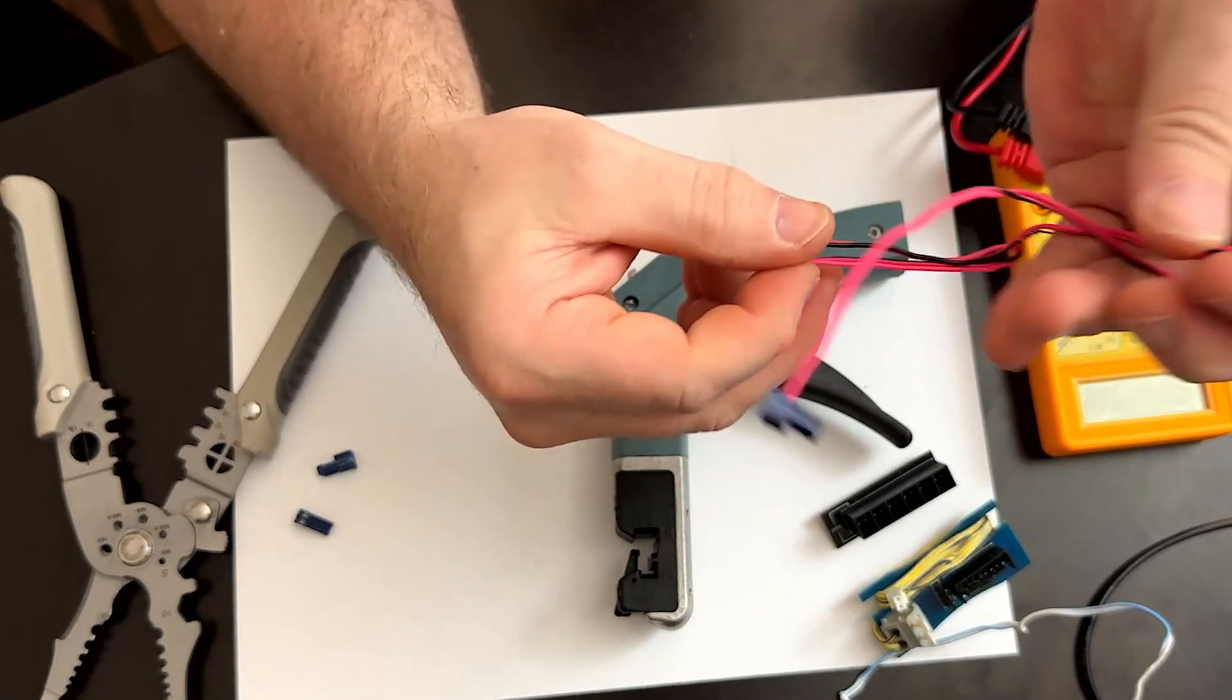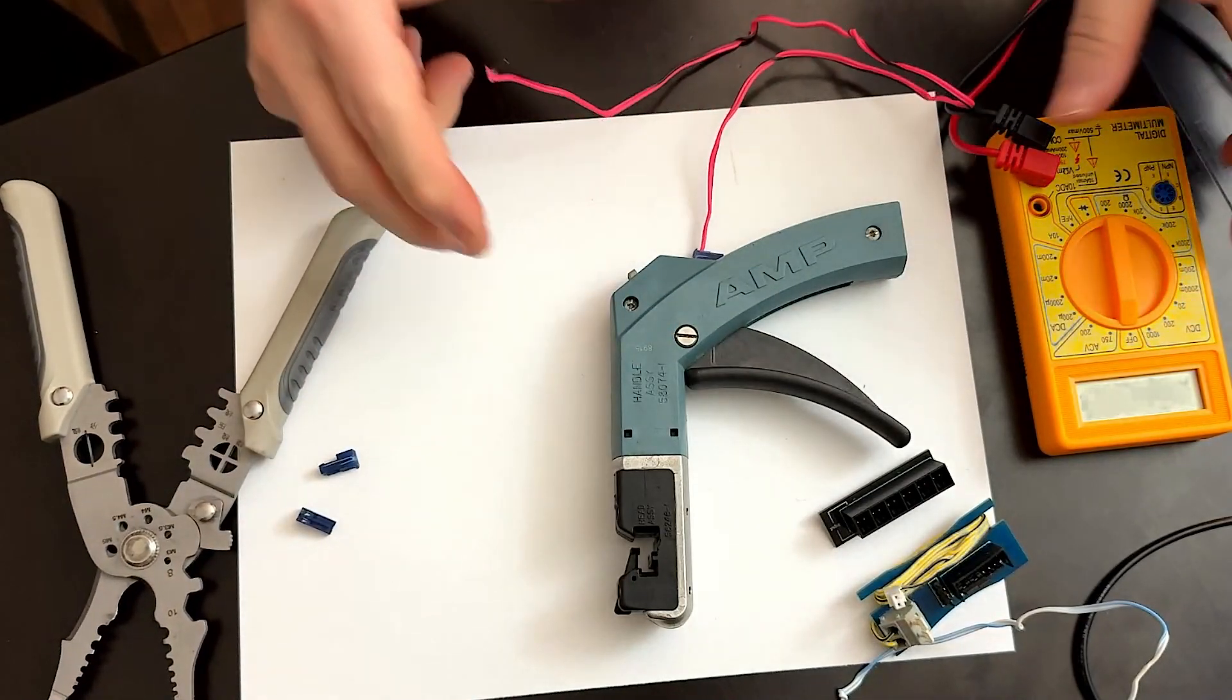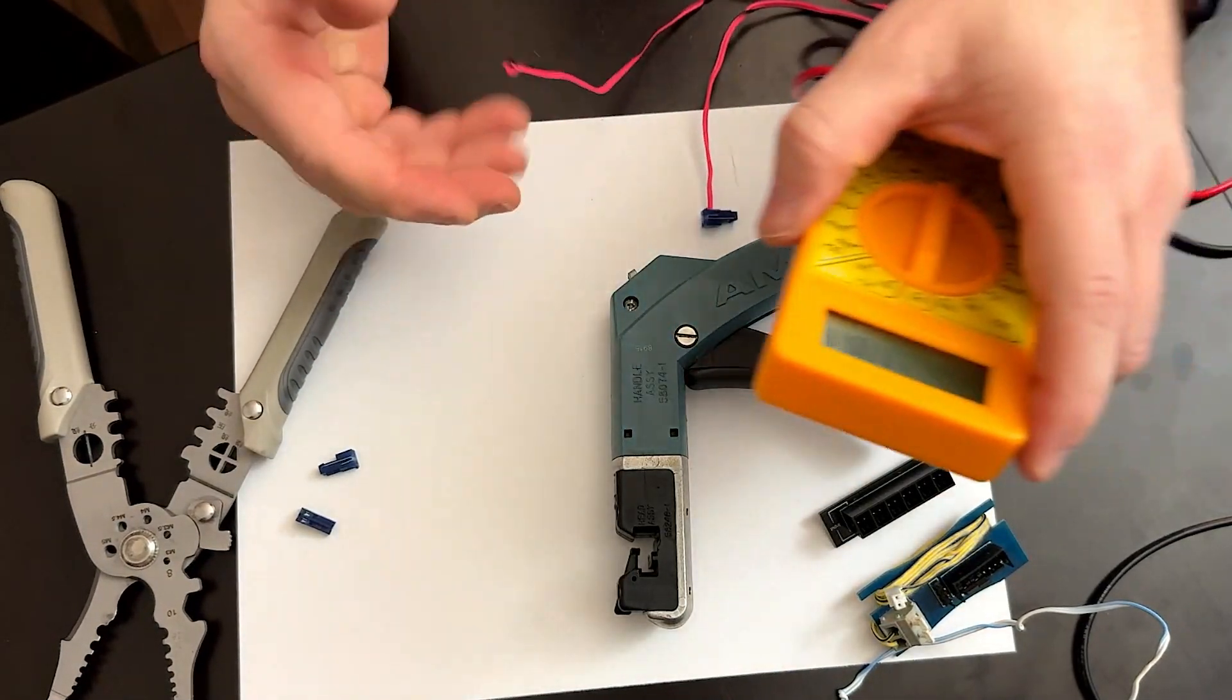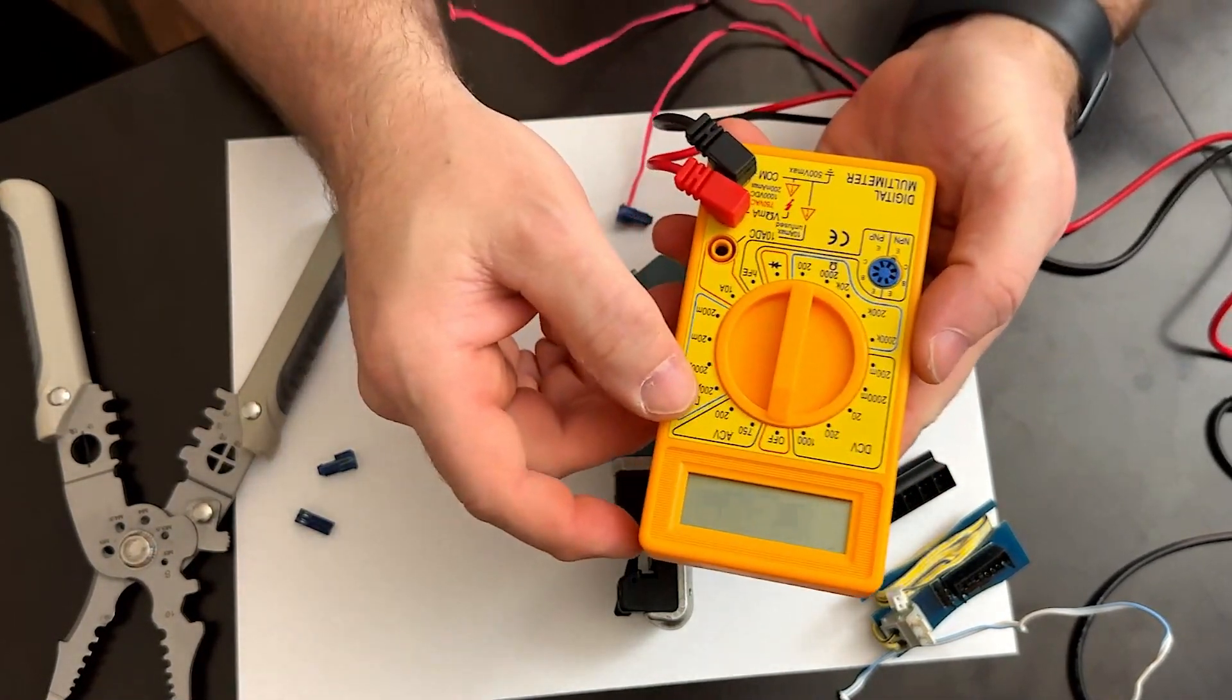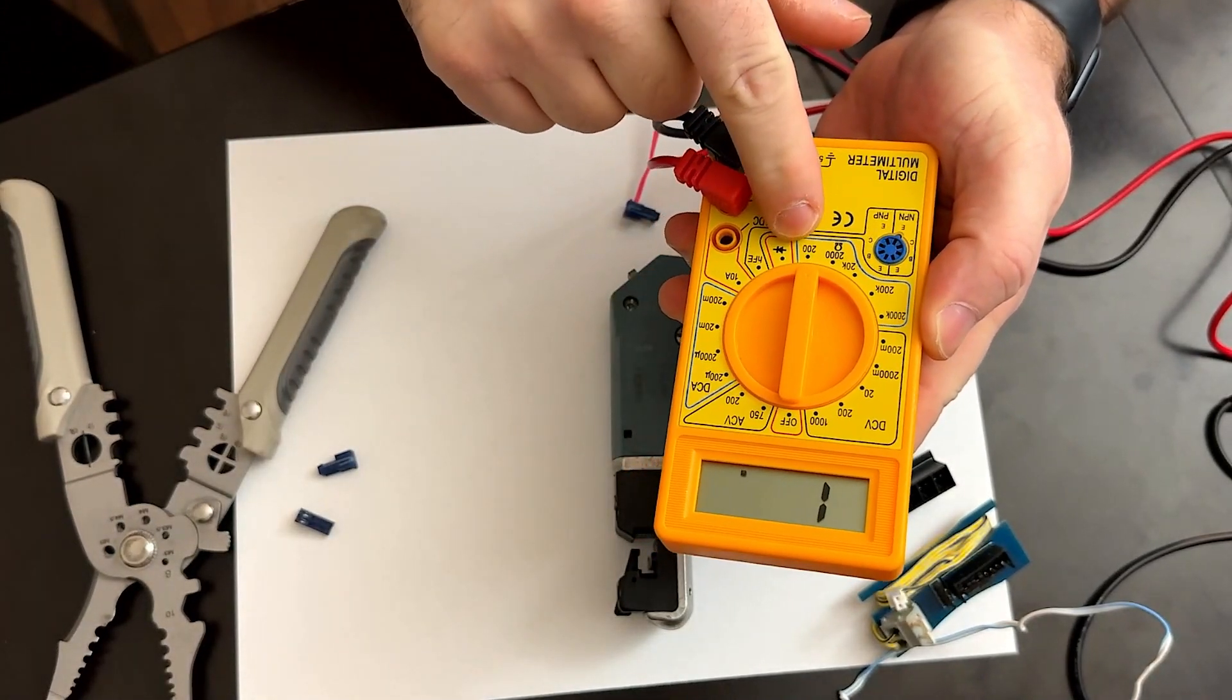So that's why I've got the trusty multimeter here. So we're going to take this and we're going to turn it to the ohms setting down here to 200.